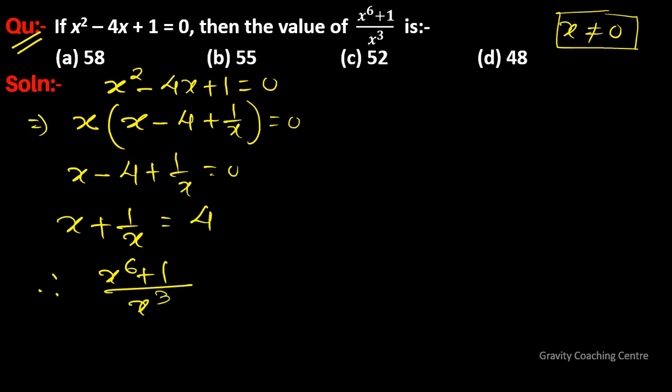equals x⁶ upon x³ plus 1 upon x³, which simplifies to (x³ + 1/x)³. Now we use the identity a³ + b³...